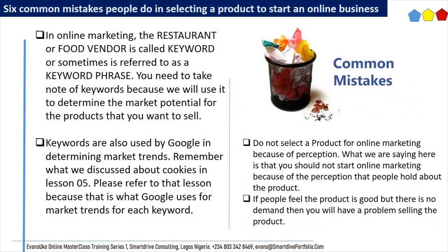Mistake 2: In online marketing, the restaurant or food vendor is called a keyword, or sometimes referred to as a keyword phrase. You need to take note of keywords because we will use them to determine the market potential for the products that you want to sell. Keywords are also used by Google in determining market trends. Remember what we discussed about cookies in lesson 05 — please refer to that lesson because that is what Google uses for market trends for each keyword.